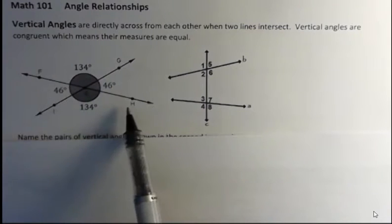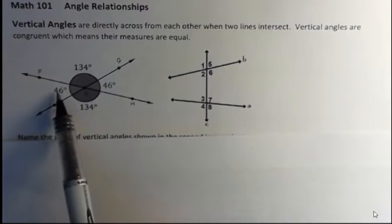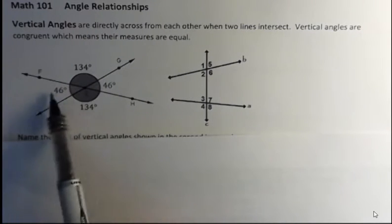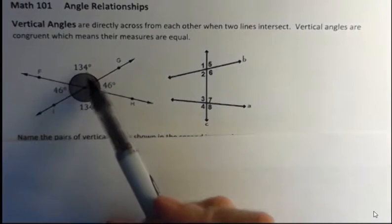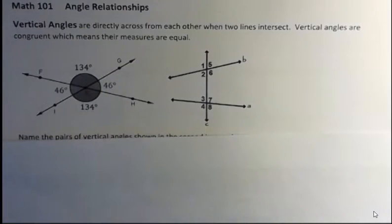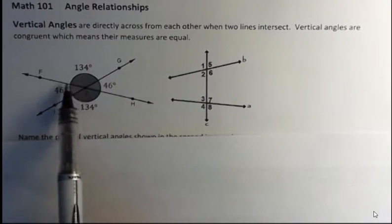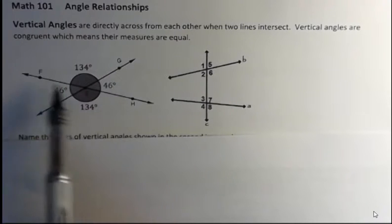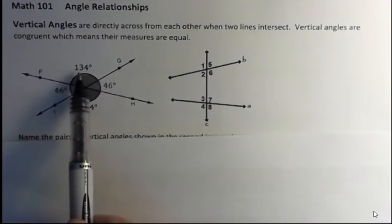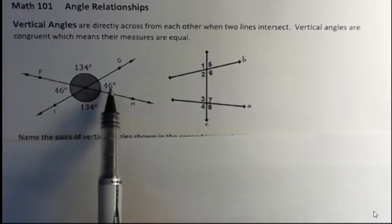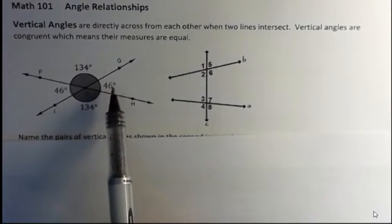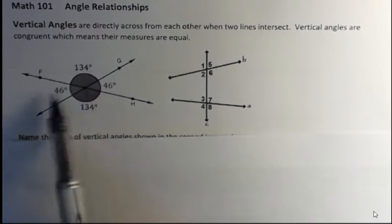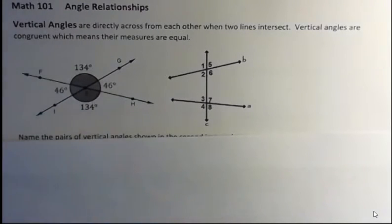So if you see these two lines that intersect, we have 46 on either side opposite each other — those are congruent. And then we have 134 on the other side, and those are congruent. Notice that if this is a straight line FH, 134 and 46 are going to add up to 180, which means they're supplementary. Across from each other are equal, and next to each other are supplementary.